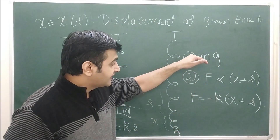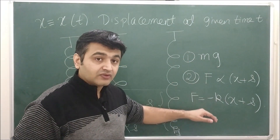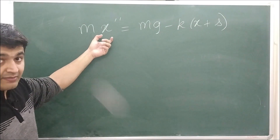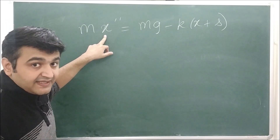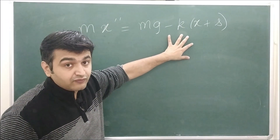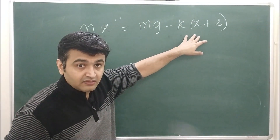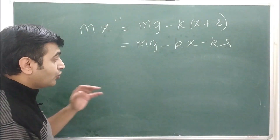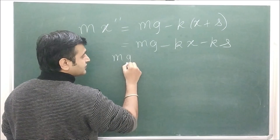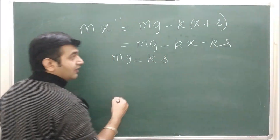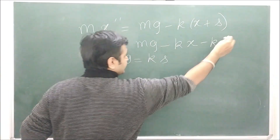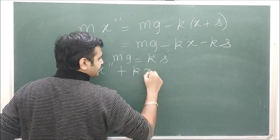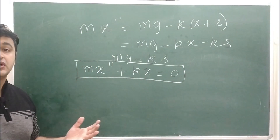The sum of forces equals mass times acceleration by Newton's second law: m·x'' = mg − k(x + s) = mg − kx − ks. But we know from the equilibrium condition that mg = ks, so those terms cancel. What remains is m·x'' + kx = 0. This is the differential equation modeling the undamped mass-spring system, where m is mass and k is the spring constant.